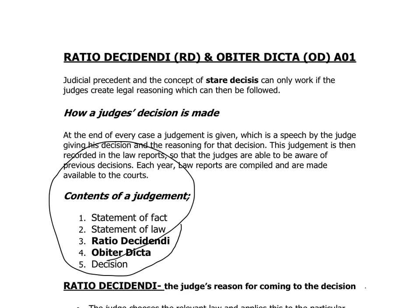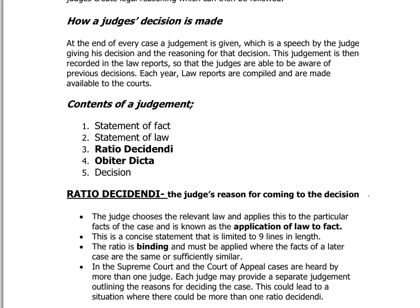The obiter actually takes up most of the judgement, and at the end there will be the decision — guilty or not guilty. Out of all five components, you just need to understand the idea of the ratio and the obiter. So, ratio decidendi — out of the whole judgement, this is the most important part.